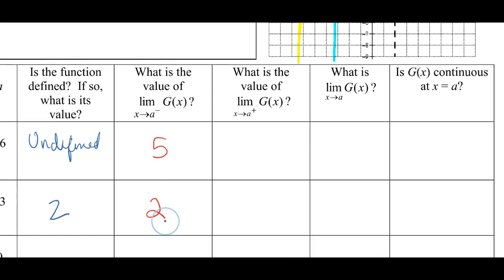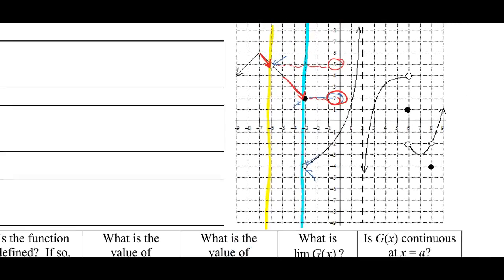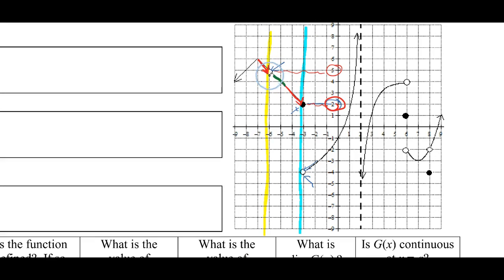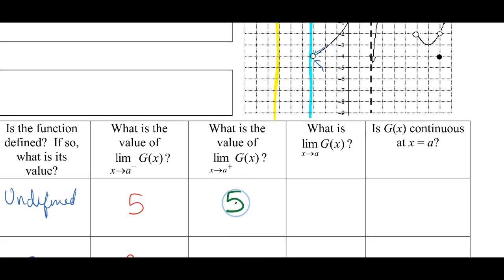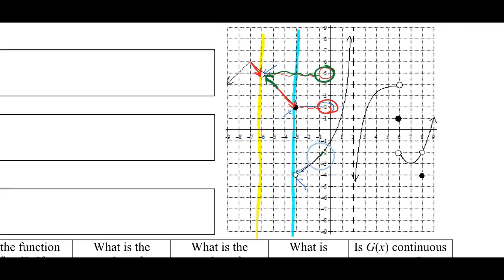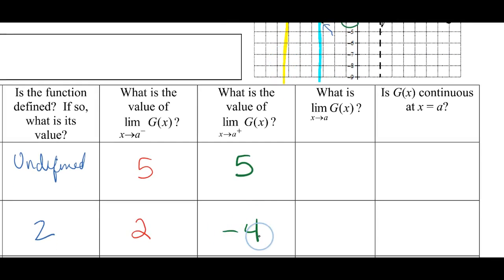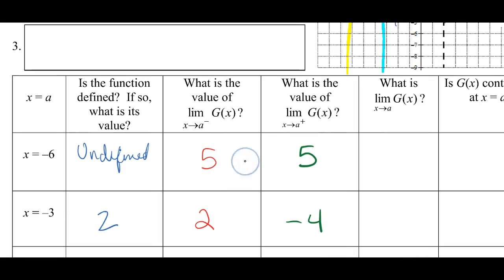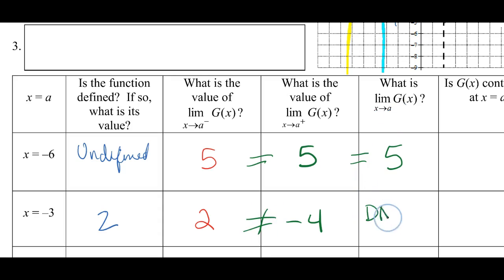For the limit from the right: approaching x = −6 from the right, I also approach 5. Approaching x = −3 from the right, I approach −4. Therefore, the two-sided limit at x = −6 is 5, since left equals right. But at x = −3, the left-sided limit does not equal the right-sided limit, so the two-sided limit does not exist.